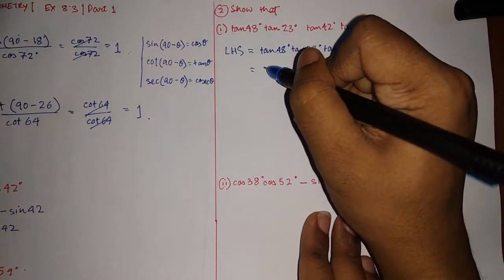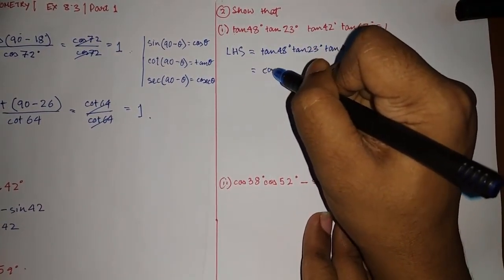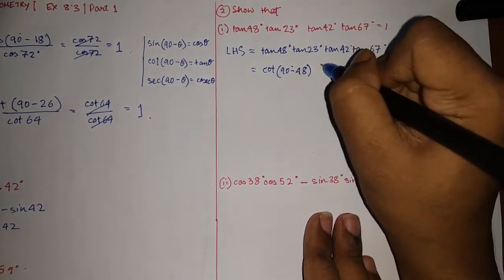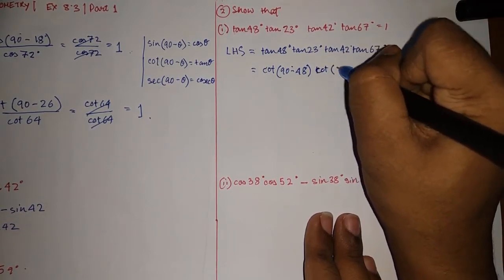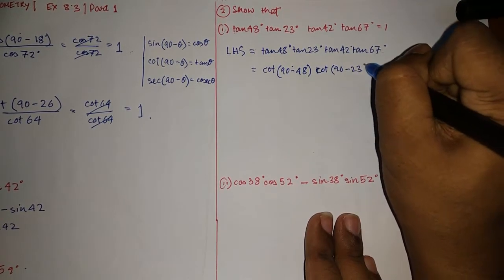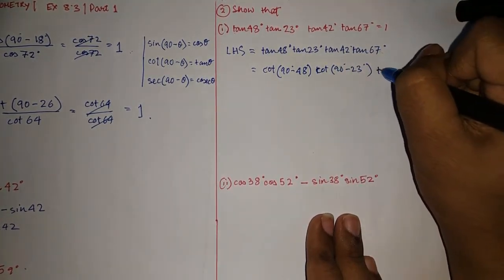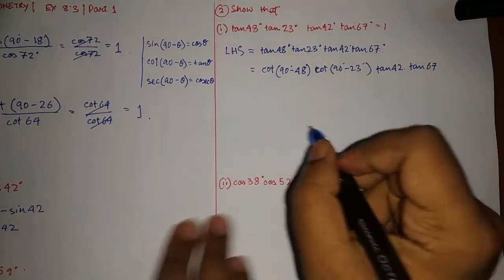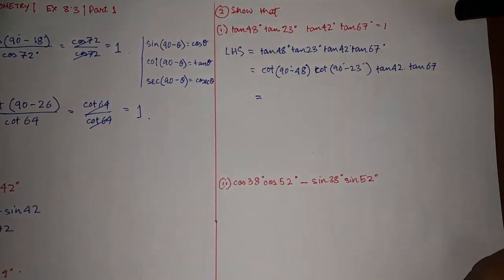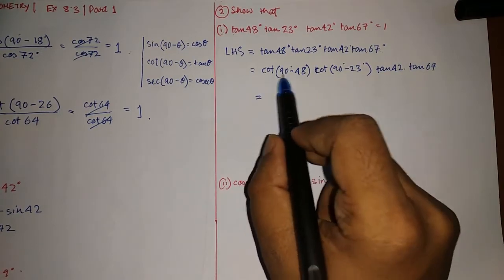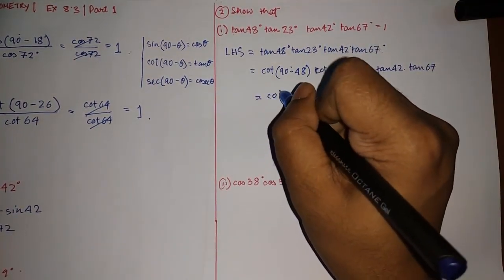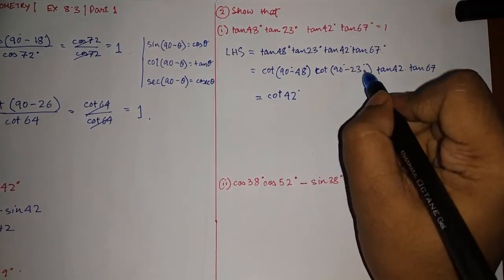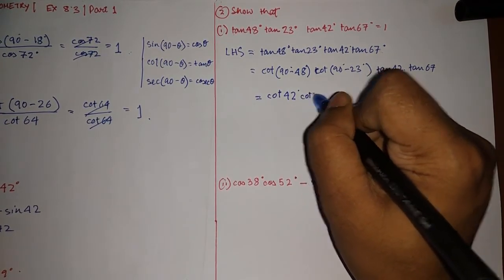Convert tan 48° into cot: cot(90° − 48°) = cot 42°. Convert tan 23° into cot: cot(90° − 23°) = cot 67°. Leave tan 42° and tan 67° as they are. So we now have cot 42° · cot 67° · tan 42° · tan 67°.